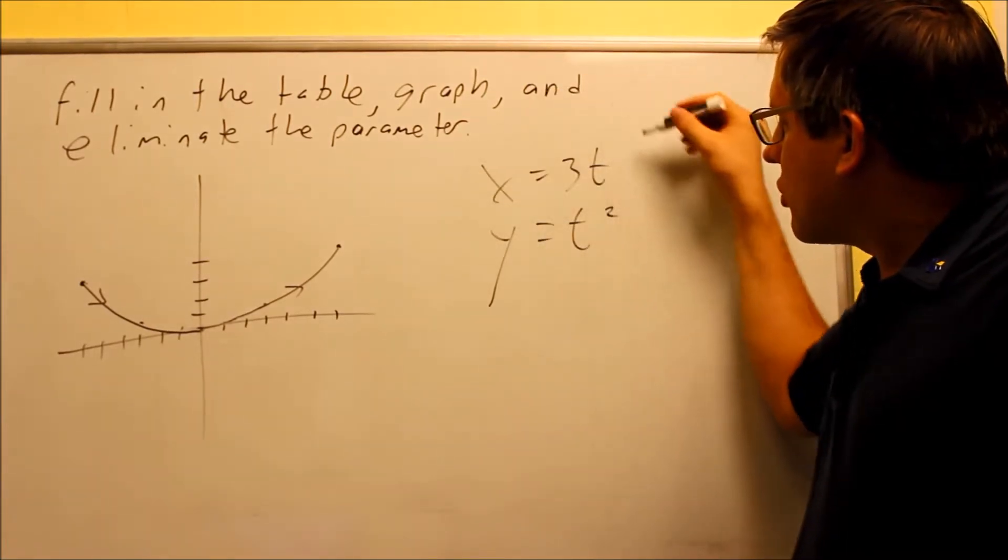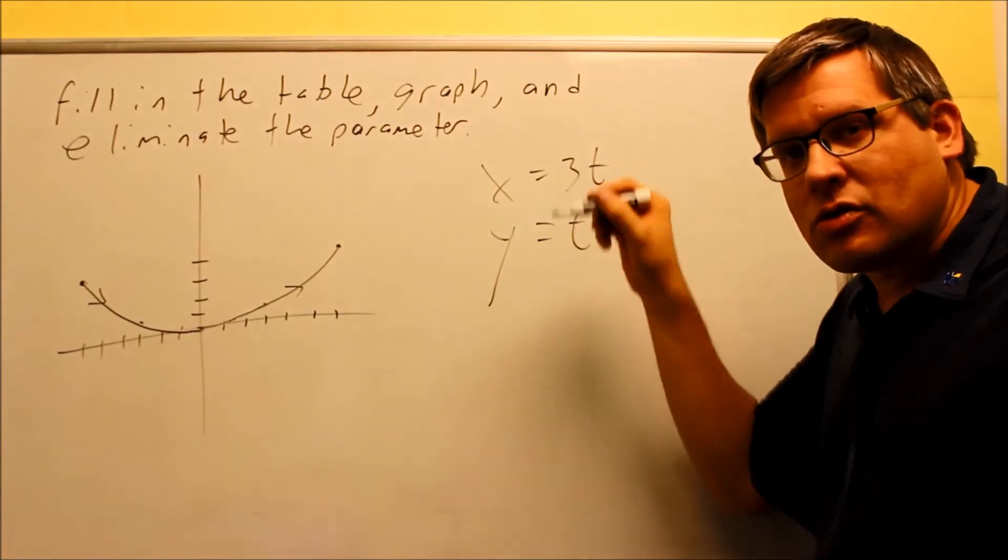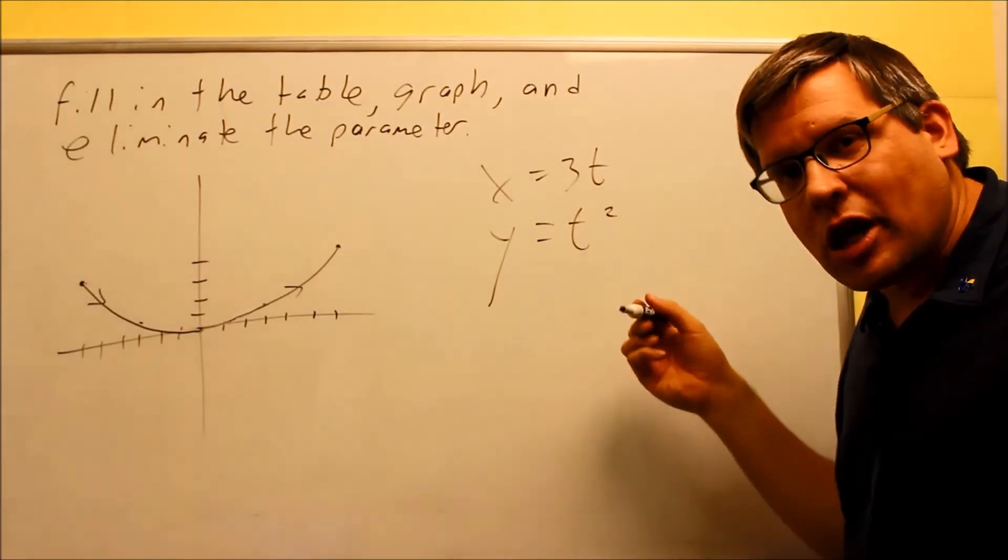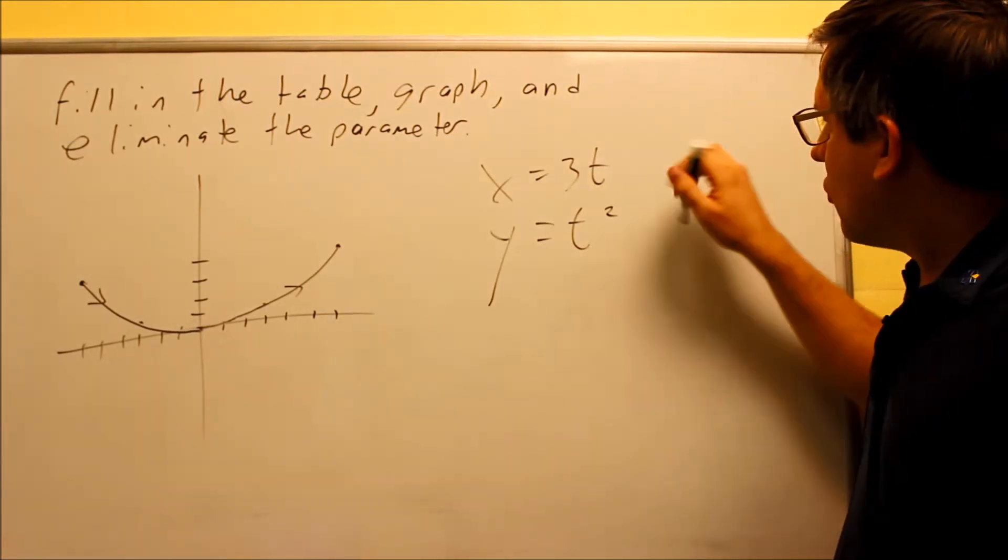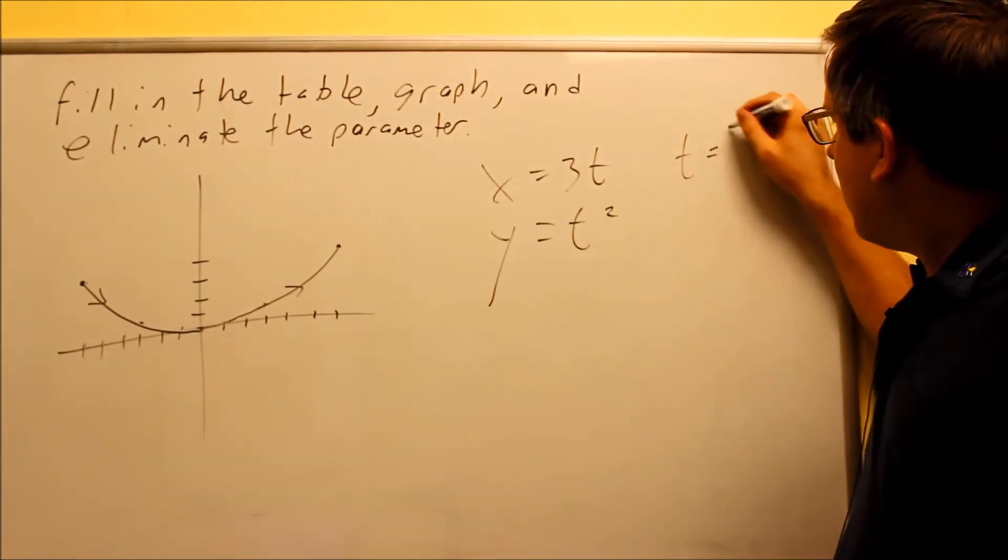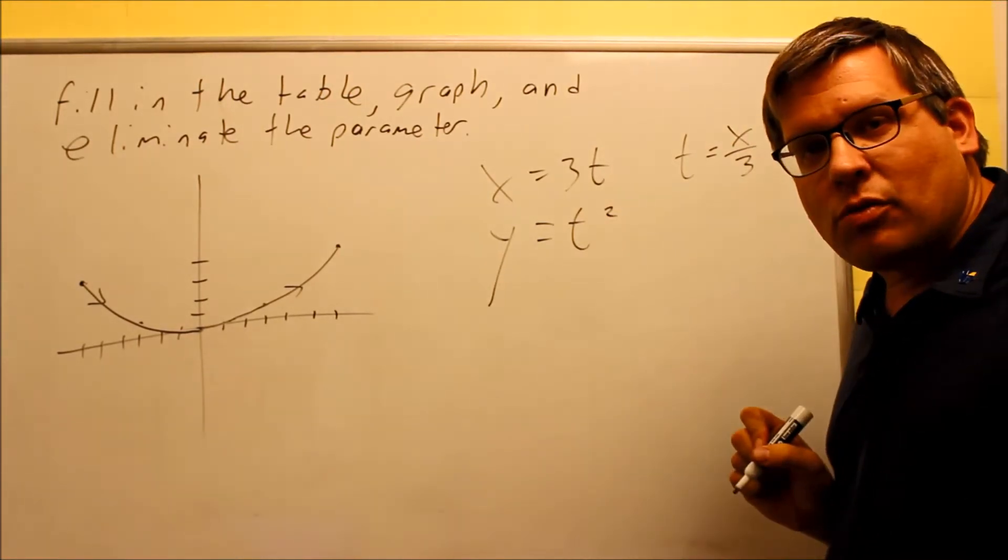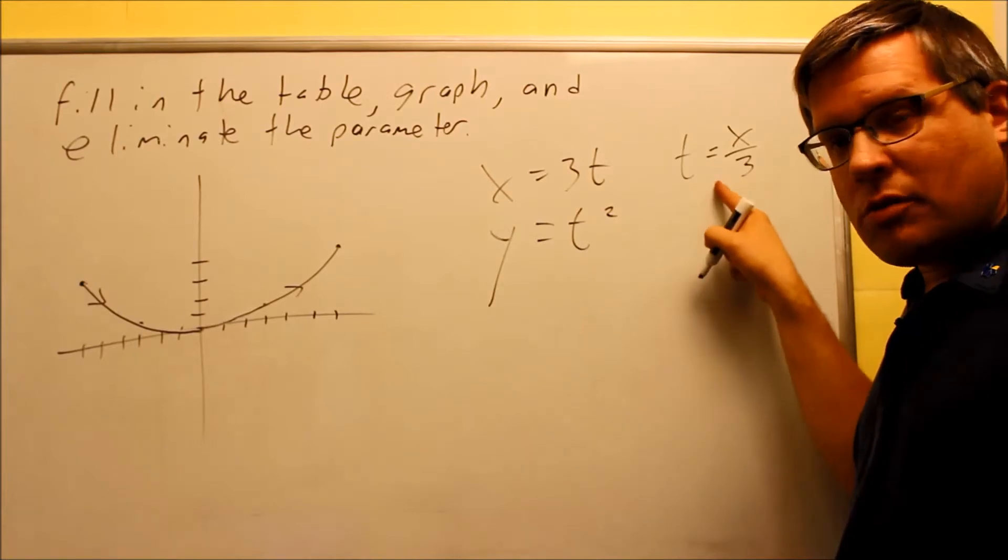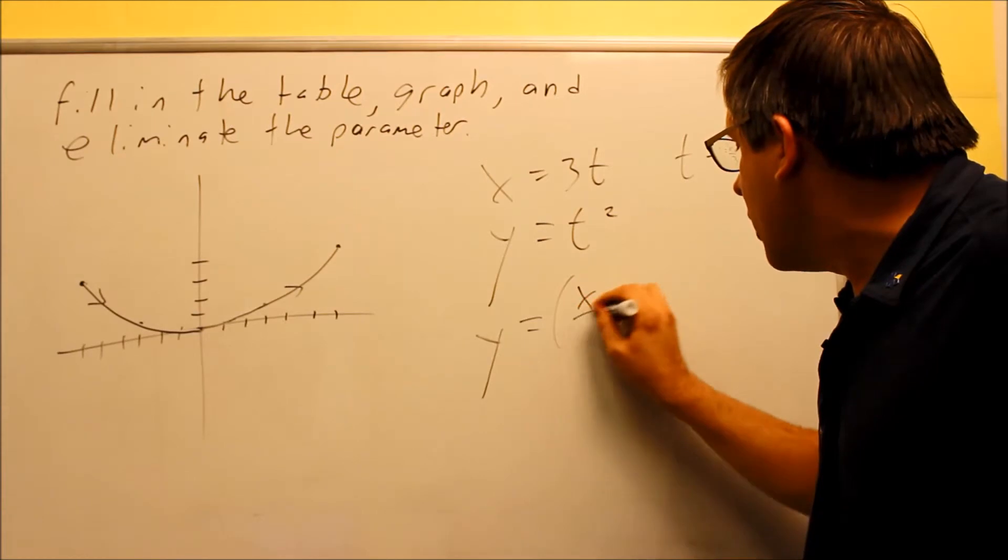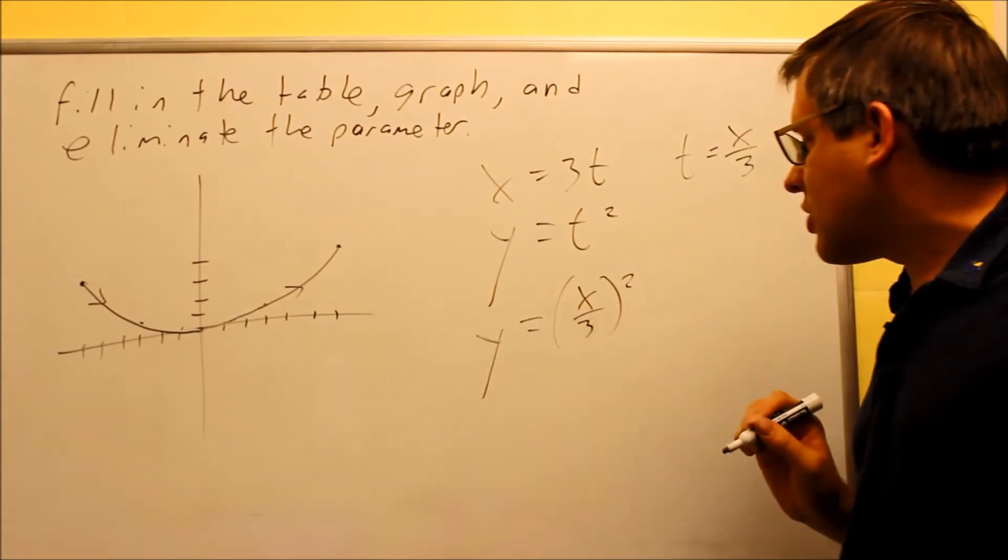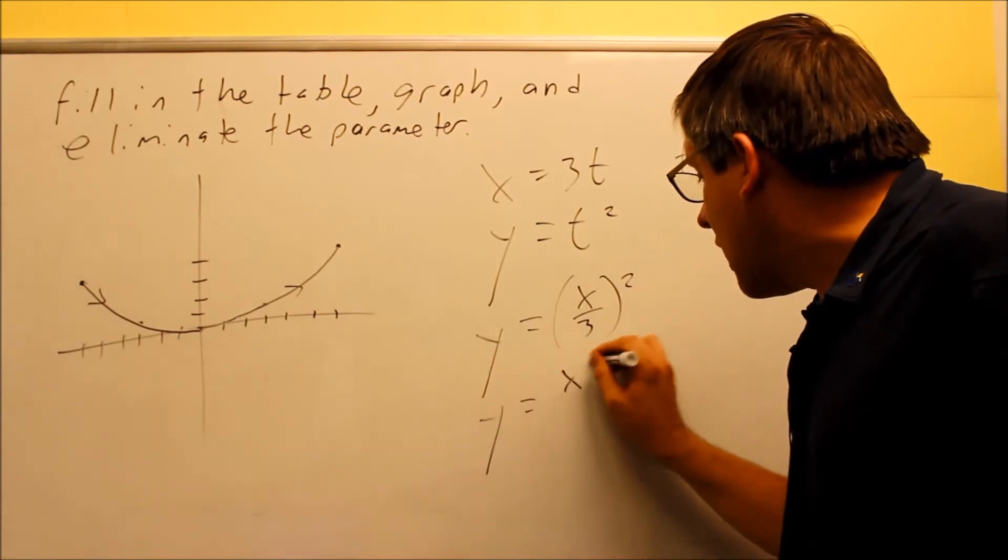The easiest one to solve for will be the first one here because if you try and solve this for t, you'll get square root plus or minus, that's going to be more complicated. It's going to be easier to solve this one. So if I take this one right here, and I solve for t, I'm going to get x divided by 3 if I divide both sides by 3. Then I'm going to take this one and put it into here. So then if we do that, we get rid of the t, replace it with x over 3, and that's going to be squared. You can either leave your answer like that, or you can make it x squared over 9.